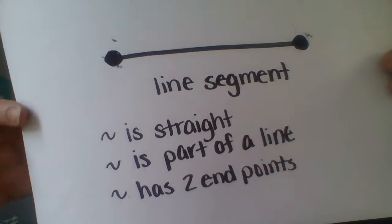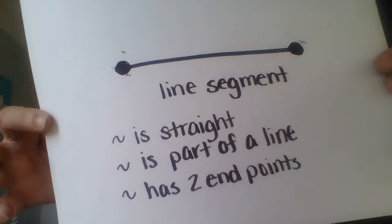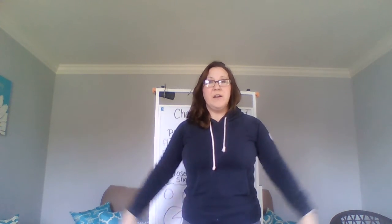The last vocabulary word is a line segment. A line segment is straight and is part of a line, but it has two end points. For the gesture, we're going to make two fists in a straight line. It could be tilted or go up and down. Those are your words for lesson one.